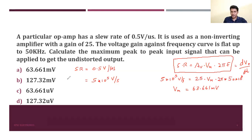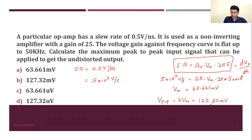The question asks for the peak-to-peak input signal voltage. The peak-to-peak value is 2 × Vm. The answer is 127.32 mV, which is option B.